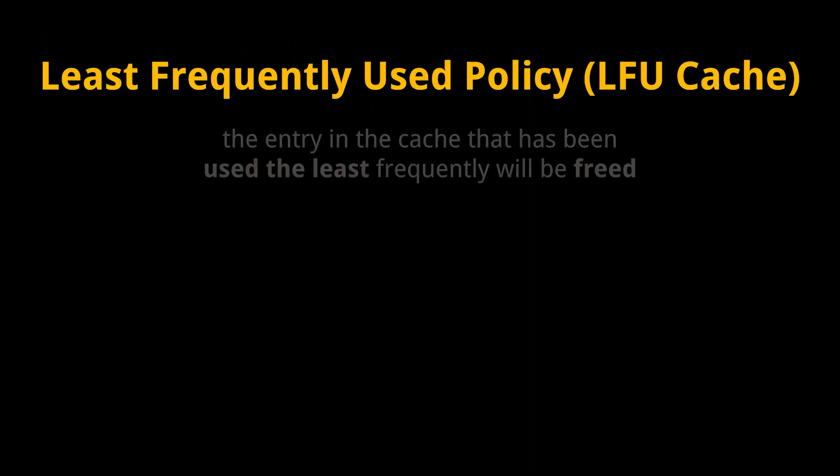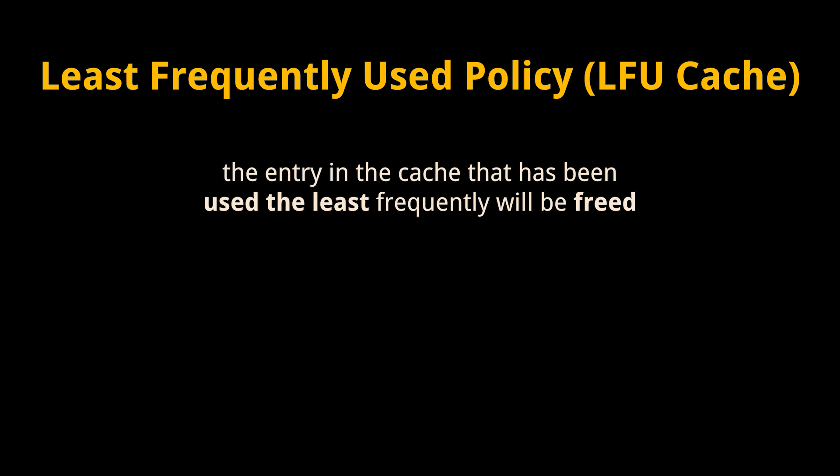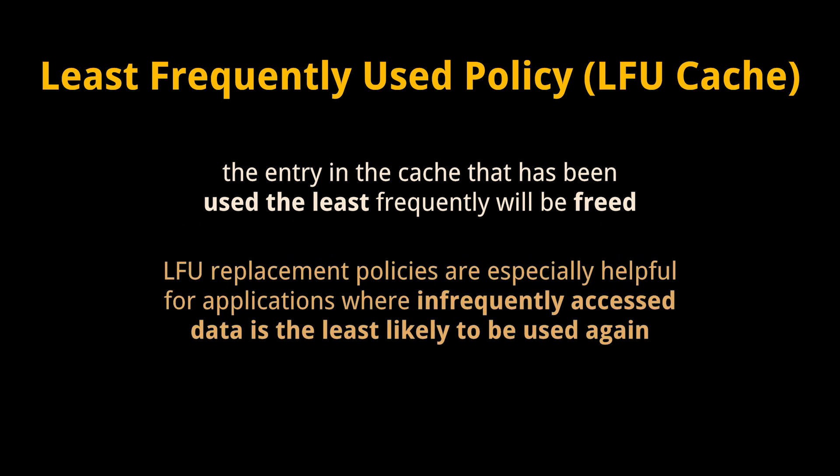The second policy is LFU, or Least Frequently Used. In an LFU replacement policy, the entry in the cache that has been used the least frequently will be freed. Frequency is tracked with a simple access count in the entry metadata. LFU replacement policies are especially helpful for applications where infrequently accessed data is the least likely to be used again. Stay tuned for the next video of the series, in which we will cover additional basic concepts before fully diving into solving architecture and design interview questions.